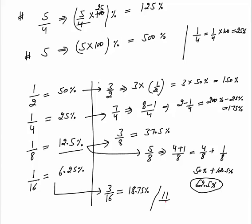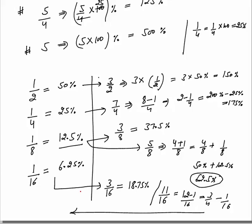For 11 by 16: this equals 12 minus 1 by 16. Twelve by 16 is 3 by 4, which is 75 percent, and 1 by 16 is 6.25 percent. So 11 by 16 equals 75 minus 6.25, which is 68.75 percent.